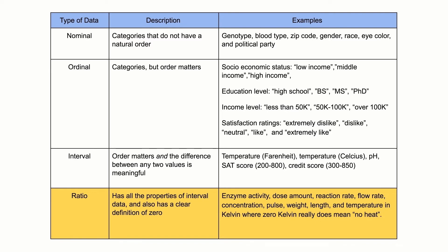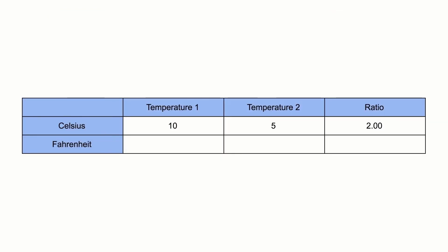For example, a weight of 4 grams is twice as heavy as a weight of 2 grams. However, a temperature of 10 degrees Celsius should not be considered twice as hot as 5 degrees Celsius. If it were, a conflict would be created because 10 degrees Celsius is 50 degrees Fahrenheit, and 5 degrees Celsius is 41 degrees Fahrenheit. Clearly, 50 degrees is not twice as hot as 41 degrees.